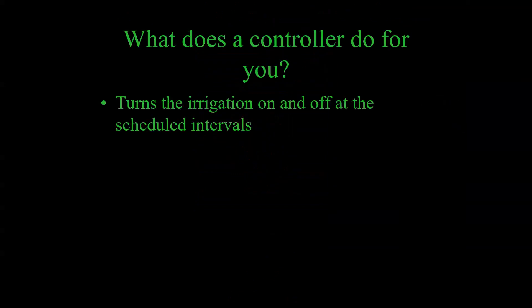Let's talk about what an irrigation controller actually does for you. It's going to turn the irrigation on and off at scheduled intervals. Before controllers, we had to go out and turn on the hose or open the irrigation valve ourselves because we were the controller. If you're watering every day you remember, but if you're trying to water your trees once every 14 days and you're not marking it on a calendar, by day 7 you don't remember when you last watered. Set the controller to water once every 14 days and that's exactly what it'll do.